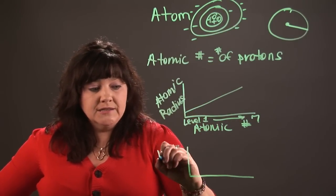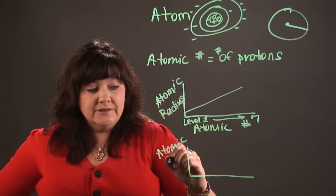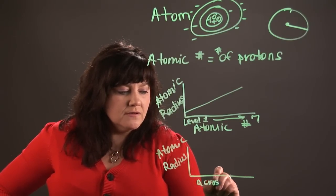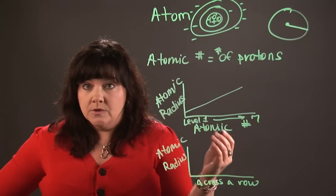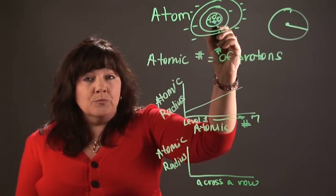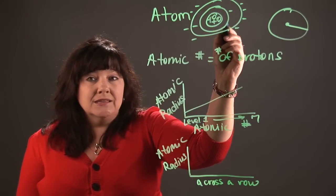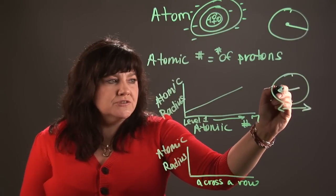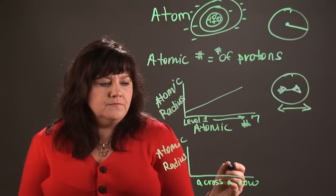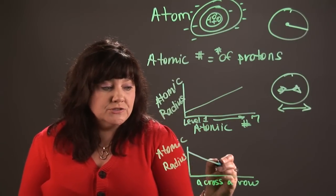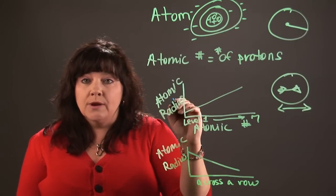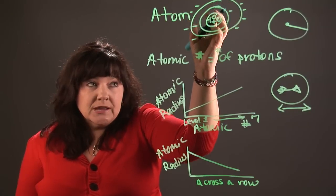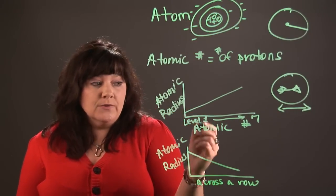But within one row of the periodic table, something different happens, and that has to do with the attraction between positive and negative charges. As you go across a row — or a period, as we call it in chemistry — something different happens. As I'm adding more protons and more electrons, I'm actually increasing the amount of attraction between the inside and the outside of the circle. So what's going to happen is that as I increase the attraction, the size of the circle is actually going to shrink — it's going to get smaller. So instead of the radius going up, the radius actually goes down. As you go across the periodic table, the attraction between the protons and the electrons gets larger, and so the atom itself is actually shrinking in because there's a lot of empty space in that electron cloud. The atom shrinks in, and so the radius is actually going to reduce.